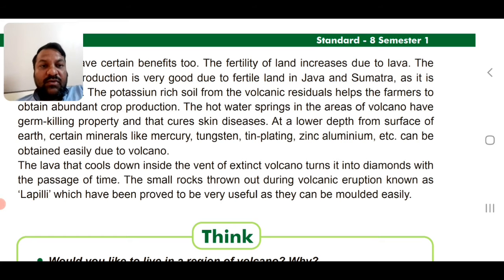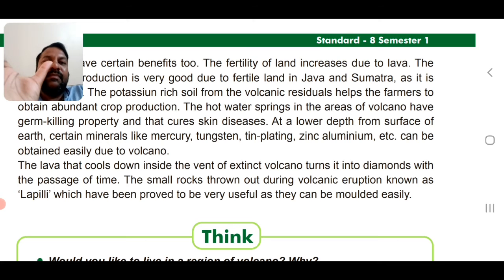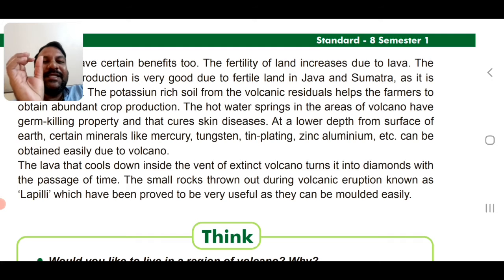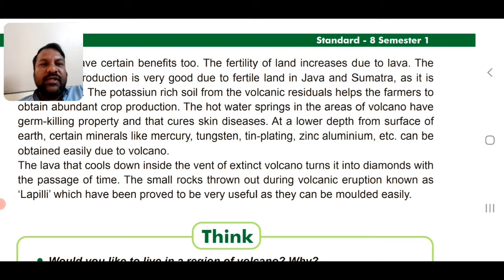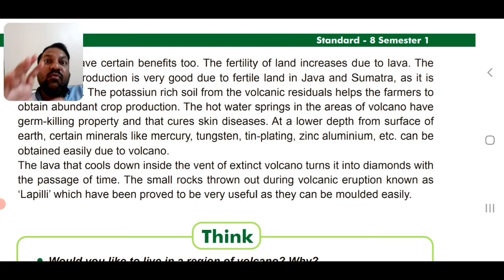The lava that cools down inside an extinct volcano turns into diamonds with the passage of time, creating so much pressure that it forms diamonds. The small rocks thrown out during volcanic eruption are known as lapili — also called lapis lazuli in some places — which are very useful as they can be molded easily.